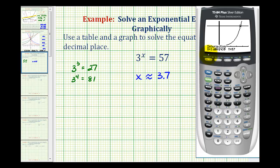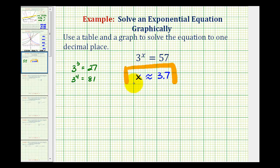If we round the x coordinate of this point of intersection to one decimal point, we have the same solution where x is approximately 3.7. Okay, I hope you found this helpful.